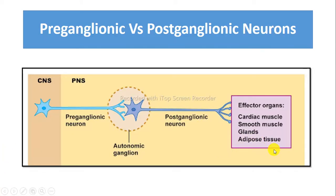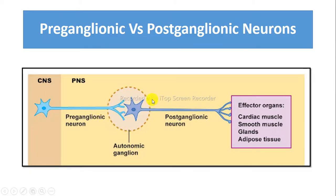So these were the differences between the pre- and postganglionic neurons in terms of their location of cell bodies, axons, what they connect to, their effector organs, and what type of receptors they are.